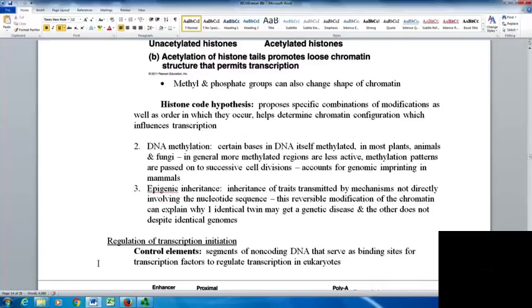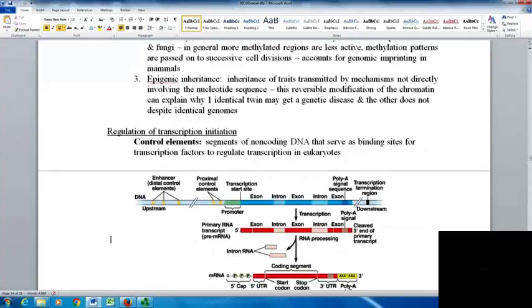Epigenetic inheritance is the inheritance of traits transmitted by mechanisms not directly involving the nucleotide sequence. This reversible modification of chromatin can explain why identical twins can have one get a genetic disease and the other not, despite having identical genomes.